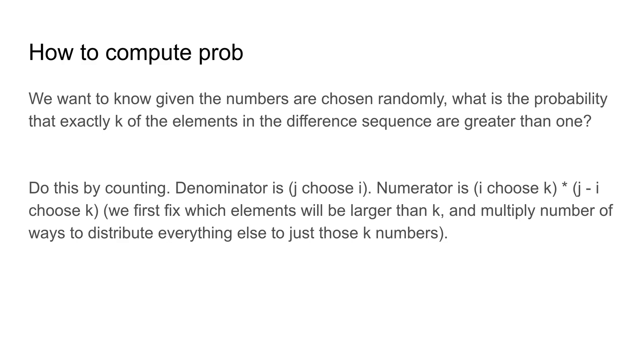In this case, we can change this to a counting problem. So we want to count the number of ways that this happens divided by the total number of ways. The total number of ways is very simple. It's just j choose i. That's because we can just choose i numbers from the j elements without any restrictions.